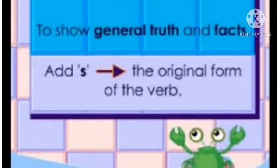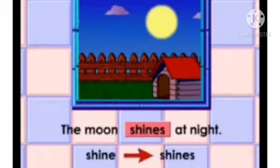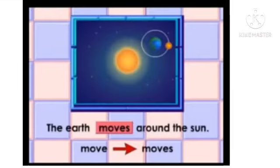Look at the following examples of general truths: The moon shines at night — the verb is 'shine,' becomes 'shines.' And: the earth moves around the sun — the verb 'move' becomes 'moves.' We add S to the original form of the verb.